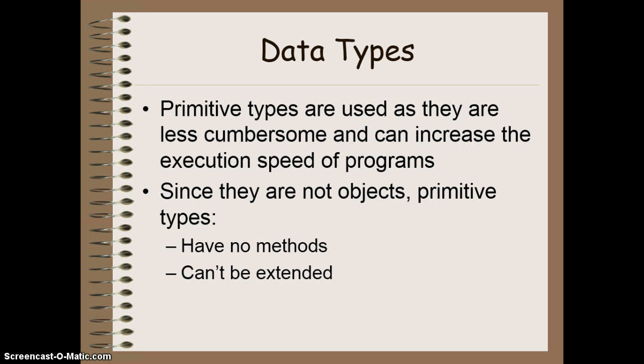Now, primitive data types are basically used so that they can speed up the execution of programs and take up less memory in the computer. But since they're not objects, primitive data types have no methods. That means you can't do int dot something or other. There's no method to do something special with integer values or chars or booleans and so on. And they also, because they're not objects, cannot be extended.